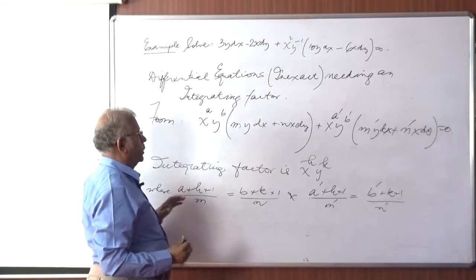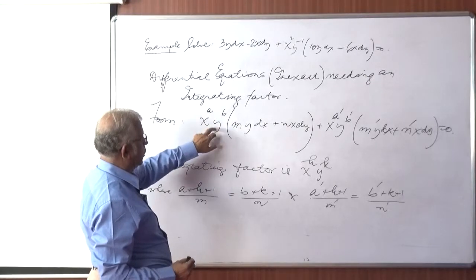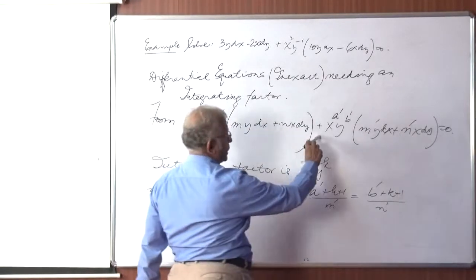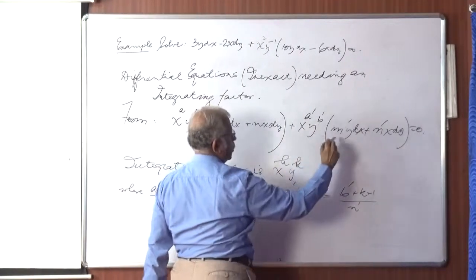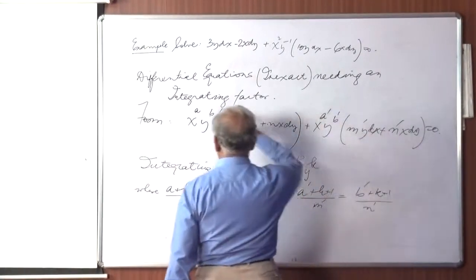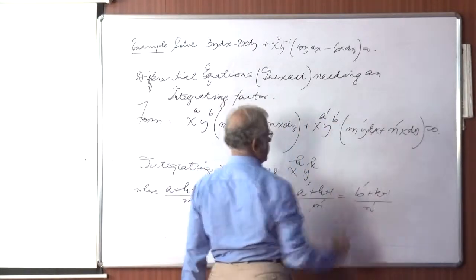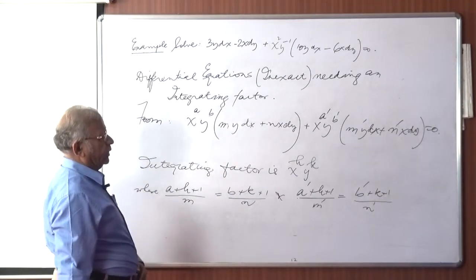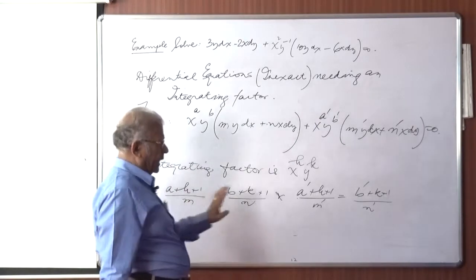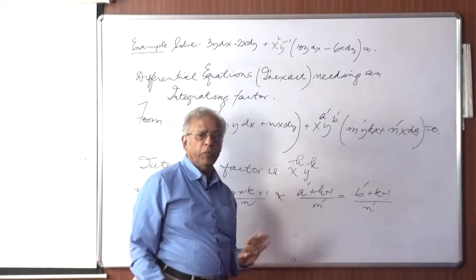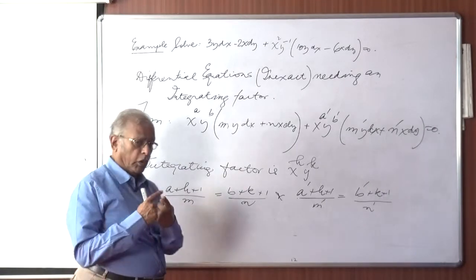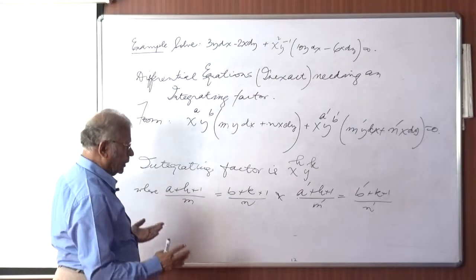Here we have another form of a differential equation, the form being x^a · y^b into (m·y dx + n·x dy) plus x^(a') · y^(b') into a similar expression with m', n', a', b'. If upon inspection an equation turns out to be like this, then the integrating factor is of the type x^h · y^k, where h and k have to be determined. There are two quantities h and k to be determined; all the others are known in a particular equation.